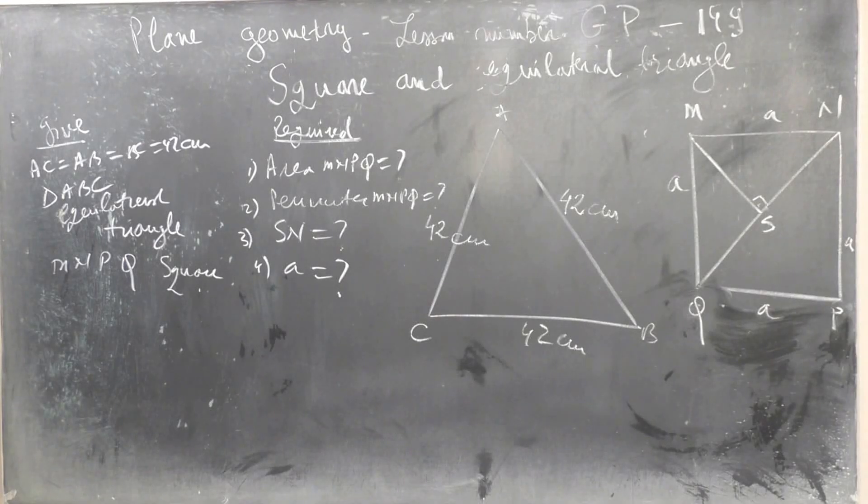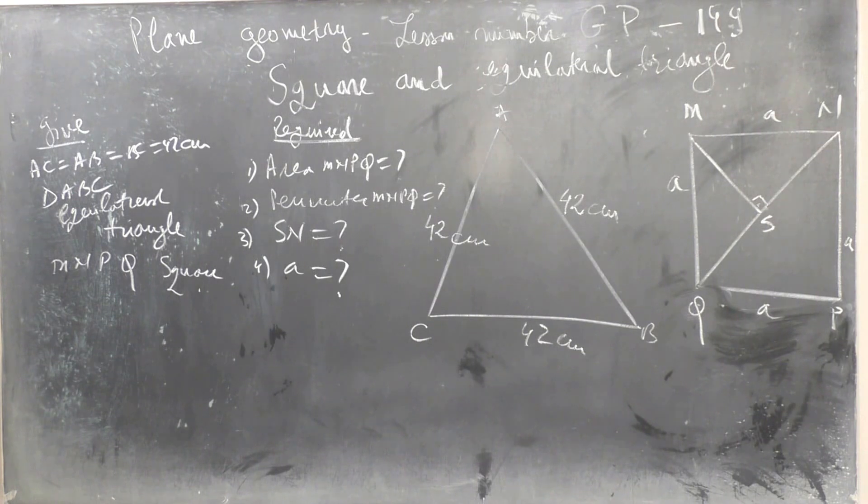Please do it 3. Lesson number 149. Square and Equilateral Triangle.